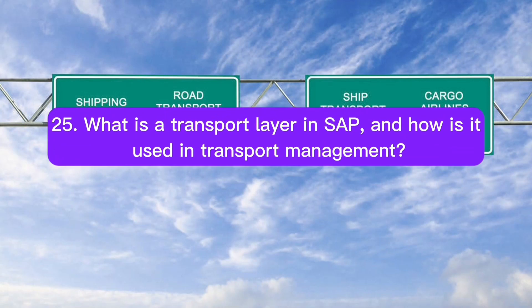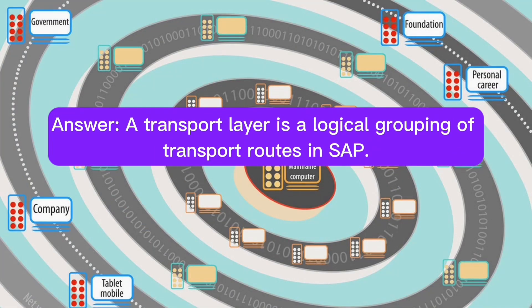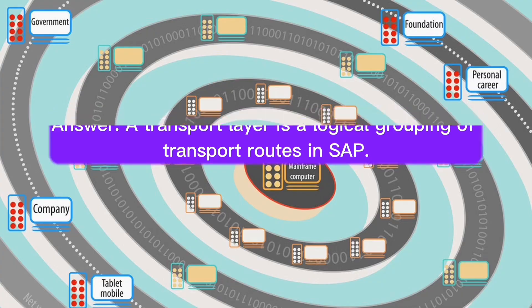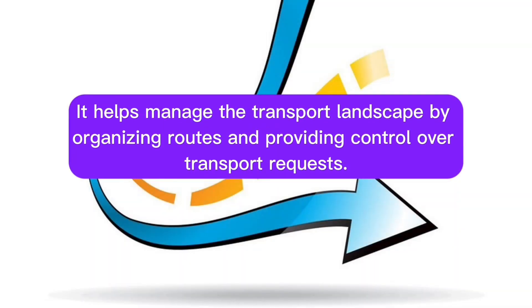Question 25: What is a transport layer in SAP, and how is it used in transport management? A transport layer is a logical grouping of transport routes in SAP. It helps manage the transport landscape by organizing routes and providing control over transport requests.